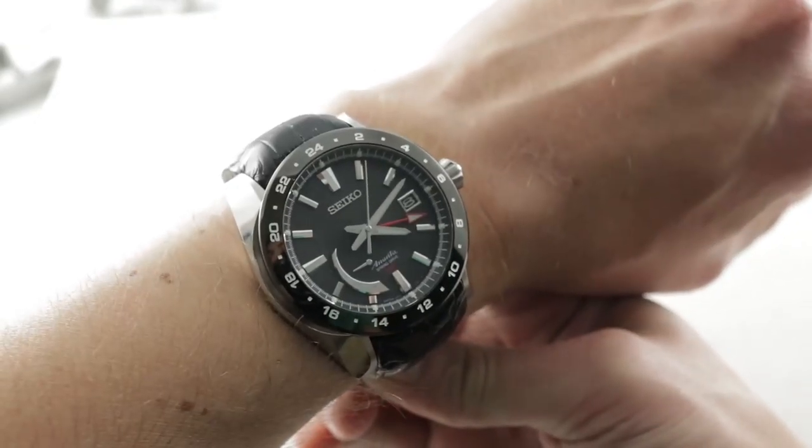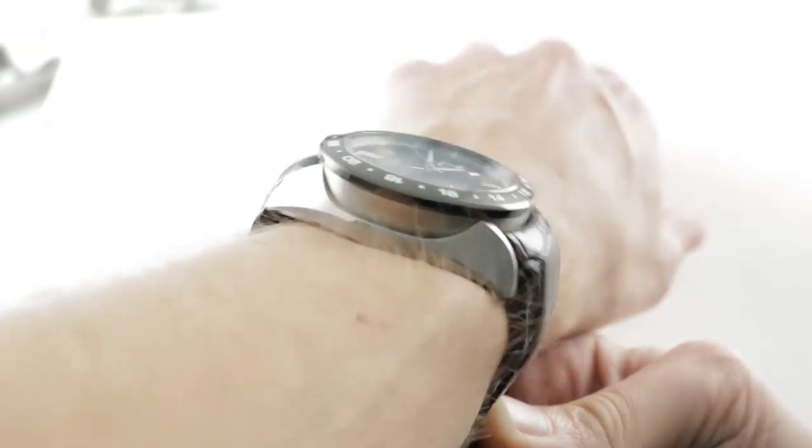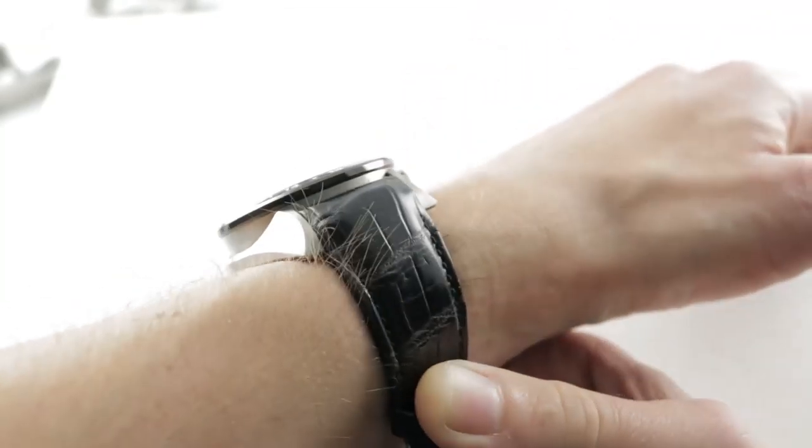This is the Spring Drive GMT. The Ananta Spring Drive GMT is a big watch, 46mm in stainless steel.